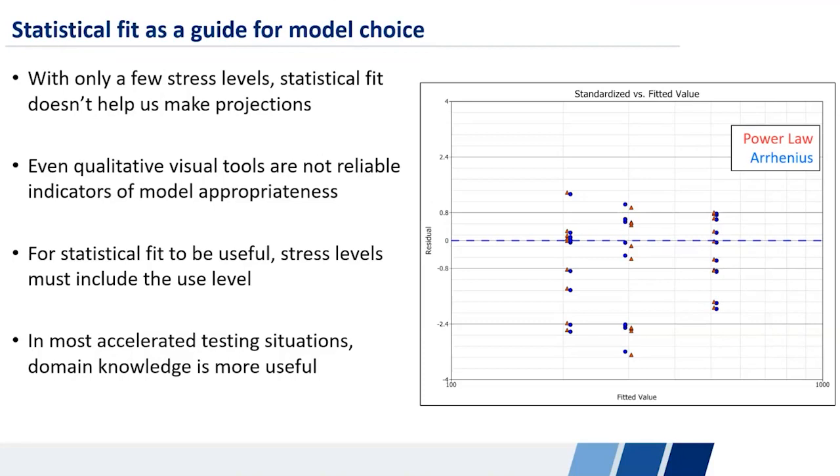So in most of our accelerated testing situations, we can't have this range include the use level. That's the whole reason we're doing an accelerated test. Therefore, we've got to rely on domain knowledge. We've got to rely on the physics of what's going on to decide which relationship is going to be most appropriate for making projections.